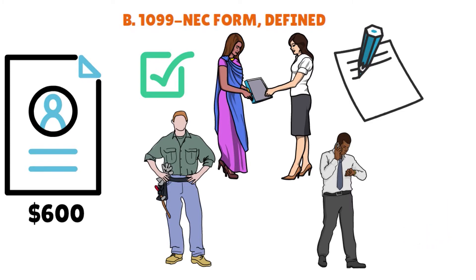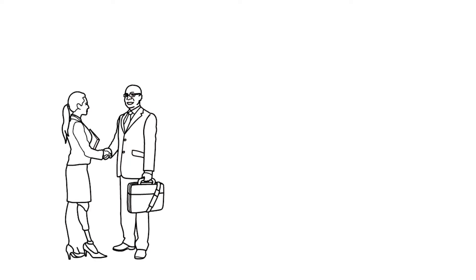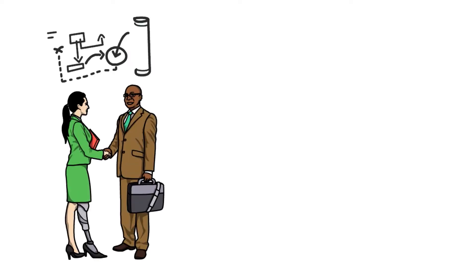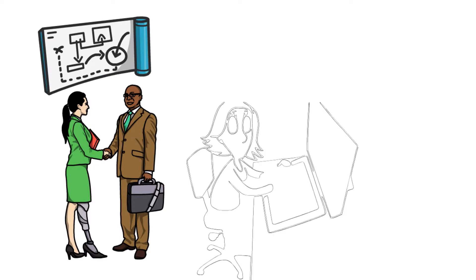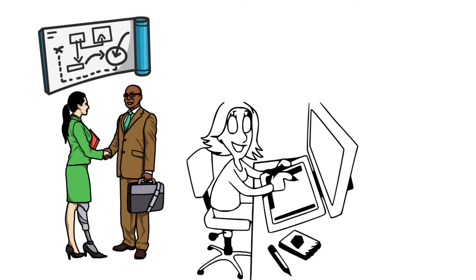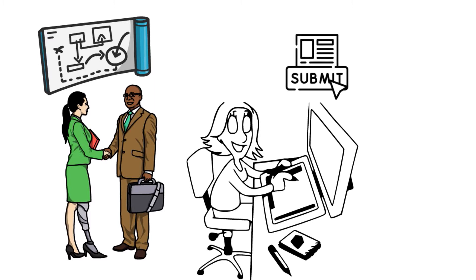The IRS defines an independent contractor as anyone you hire on a contract basis to complete a particular project or assignment. Common examples include graphic designers, web developers, copywriters, and social media consultants. If you hire a freelancer through a third-party service, you may not be required to submit a 1099 for them — for example, if you hire through Upwork, Upwork is technically doing the hiring, so you don't need to submit a 1099. The same applies to Fiverr. All contractors and partnerships who did more than $600 of work for your business should receive a 1099-NEC.